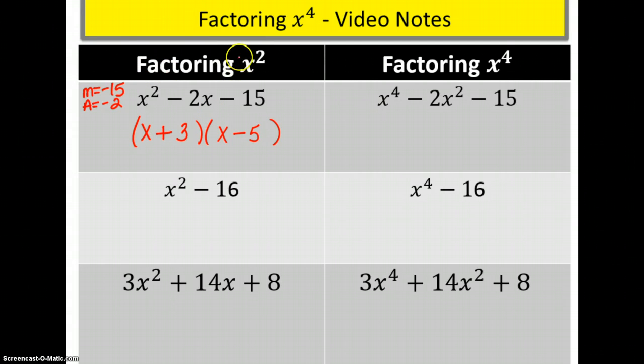x to the fourth is going to work the same way. We have an x to the fourth here minus 2x squared minus 15. So when you see an x to the fourth, it's an x to the fourth here and an x squared is the middle term. So we are still looking at what multiplies to be negative 15 and what adds to be negative 2. Except this time when we split it up it's going to be x squared and x squared. Because x squared times x squared is x to the fourth. And we're going to end up with the same things of positive 3 and negative 5.